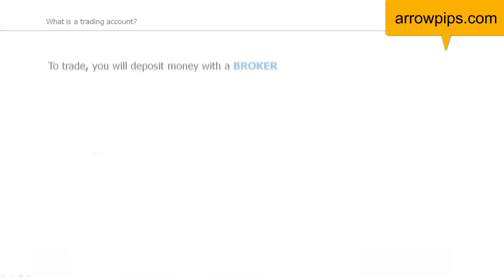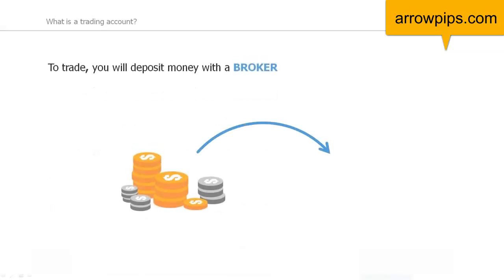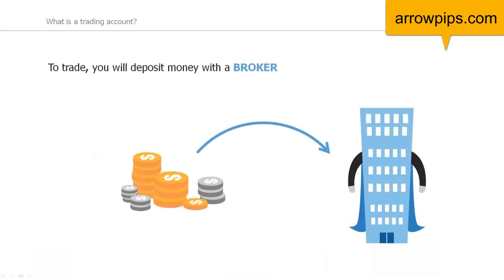In order to trade you will need to open an account with a broker. The money you deposit with the broker is the capital you will use to trade, often referred to as your trading account. However, there are different position sizes you can choose from, and the size of the position will depend on how much capital you have.